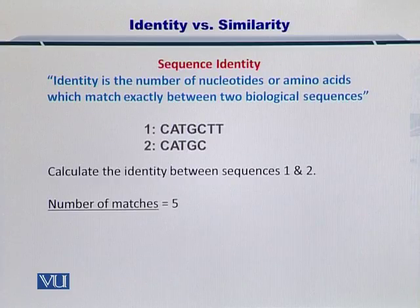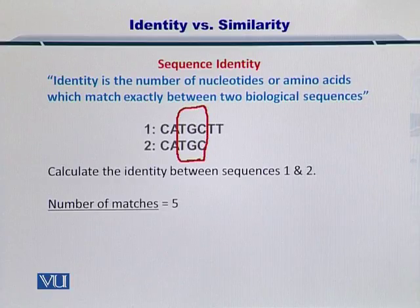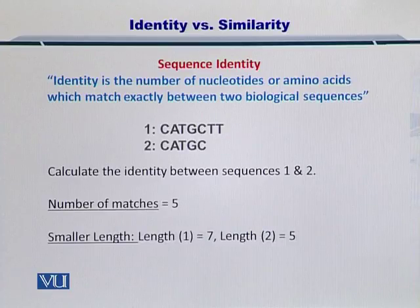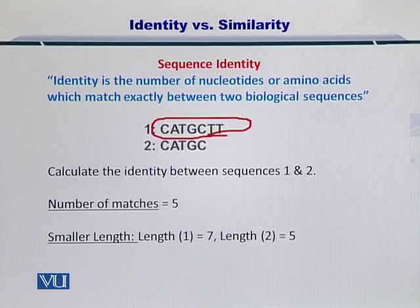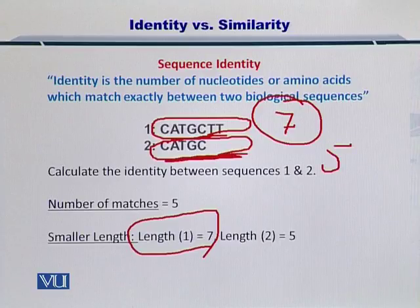As you can count, the first nucleotide C matches. The second nucleotide A also matches. Similarly, the next three nucleotides T, G, and C also match. So in total, you have five nucleotides that are matching exactly between these two sequences. Next, I need to calculate which sequence has a smaller length. In sequence one you have seven nucleotides, and in sequence two you have five nucleotides.